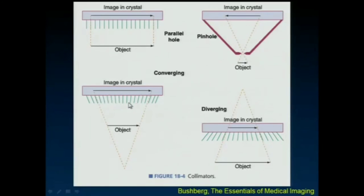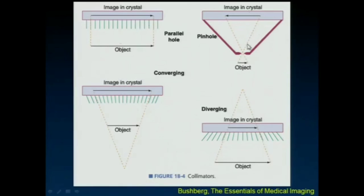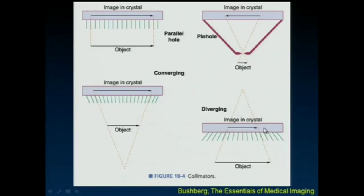A converging hole collimator has similar behavior to the pinhole, but the object doesn't get flipped and you can image closer to the object. A diverging hole collimator spreads out — the holes look at a larger field of view. Most nuclear medicine imaging is done with a parallel hole collimator. Pinhole collimators were used for thyroid imaging to magnify a small object. A diverging hole collimator was used on a portable camera for portable VQ scans in intensive care units, allowing a small camera to capture the large field of view of the chest.